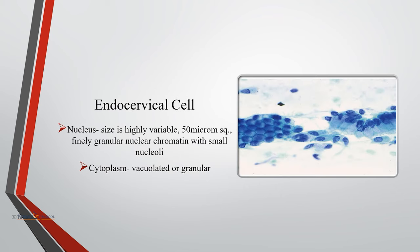Endocervical cells can be of stromal or intramural origin. Their nucleus size is highly variable, with a nuclear cross-sectional area of 50 micrometers squared, showing finely granular nuclear chromatin with small nucleoli. Cytoplasm is usually vacuolated or granular. These cells exhibit polarity with the nucleus at one end and mucin at the opposite end. When viewed from the side they form a picket fence appearance, and when viewed en face they give a classic honeycomb appearance.